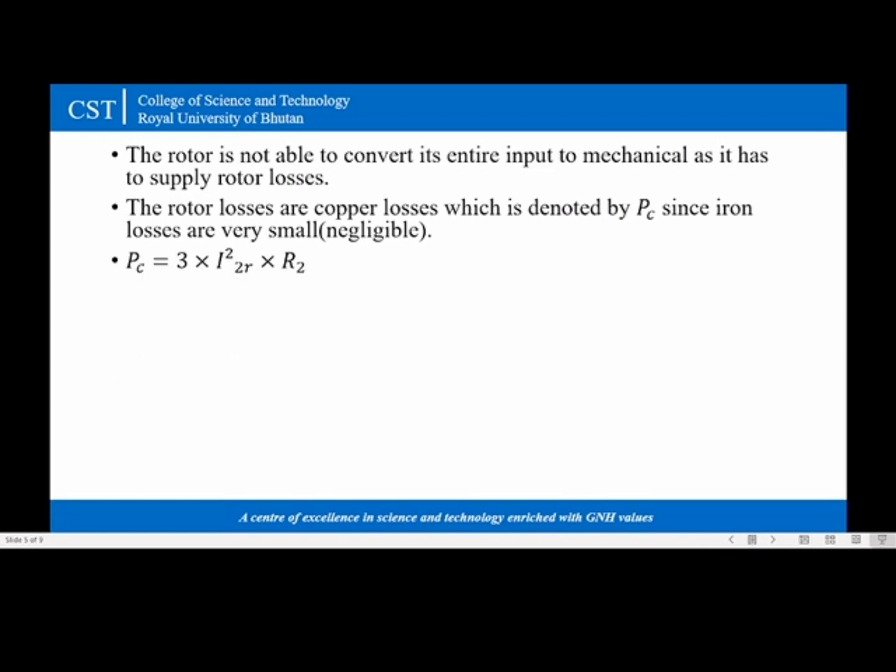So Pc is equal to three times I2r square times R2 where I2r is the rotor current per phase in running condition and R2 is the rotor resistance per phase.